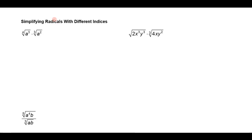Hi everyone. In this lesson I'd like to look at how to simplify radicals where you have different indices. For example, I have the fourth root of a cubed times the cube root of a squared.